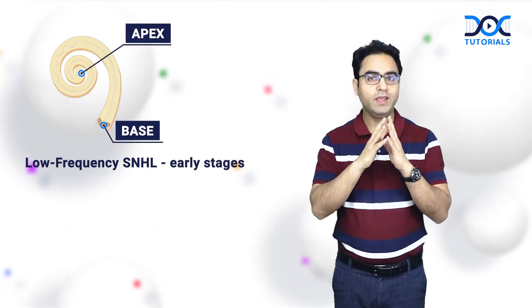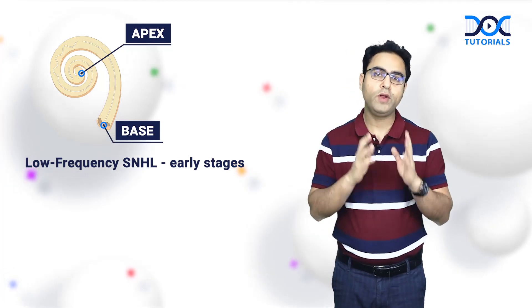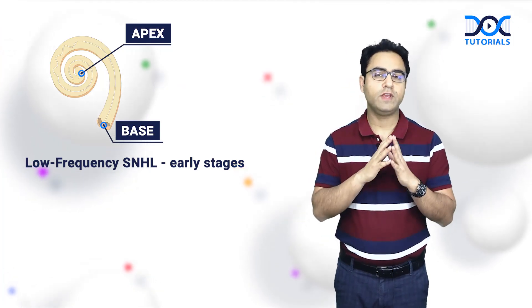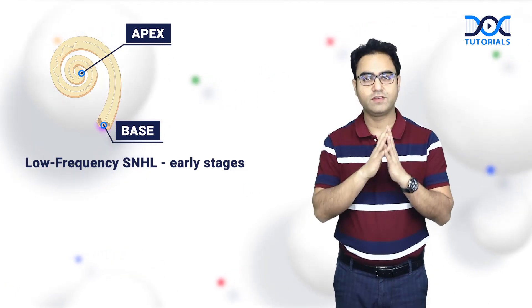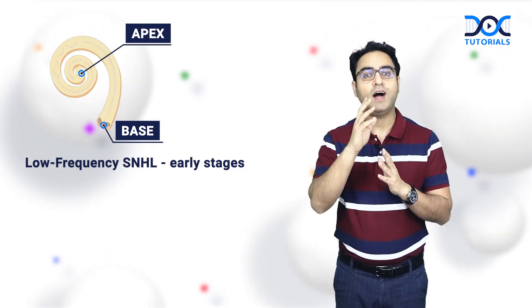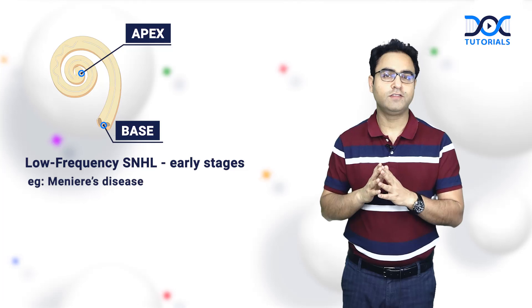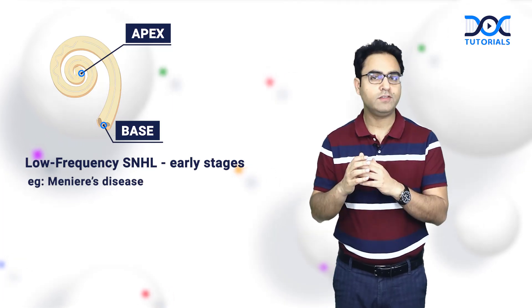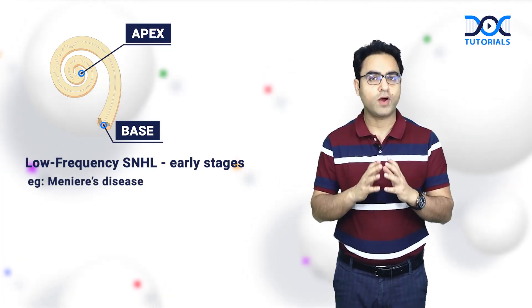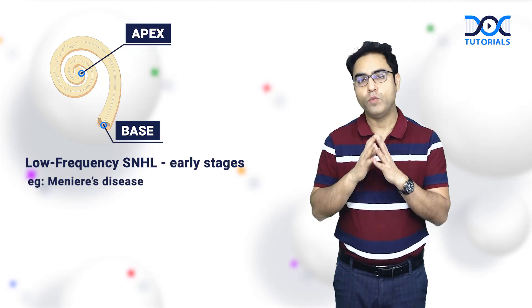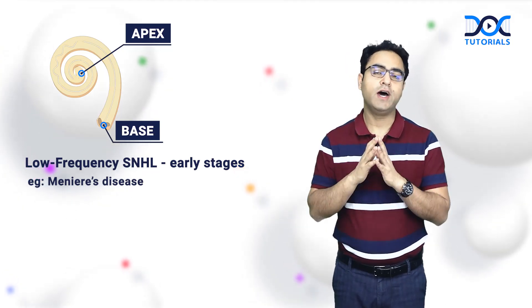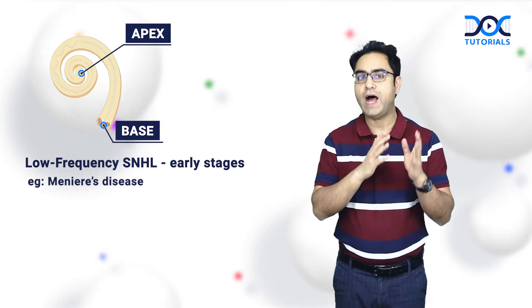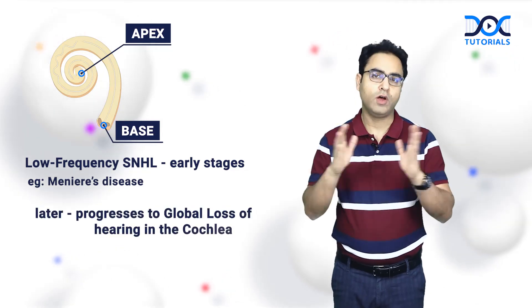Now let us come to the apex. Which disease is going to cause low frequency SNHL, because it damages the apex of the cochlea first? The answer is Menière's disease. Menière's disease in the earlier stages damages the apex of the cochlea first, and that is why we see low frequency SNHL in the early stages. But as the disease progresses, there is a global loss of hearing.